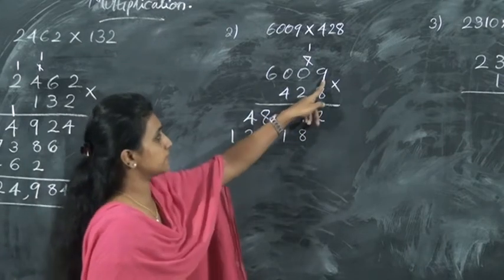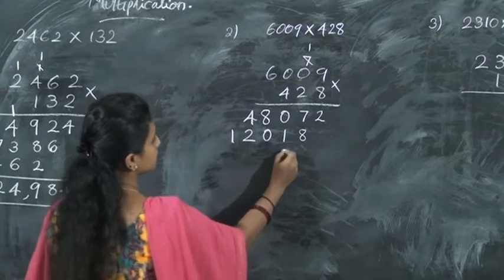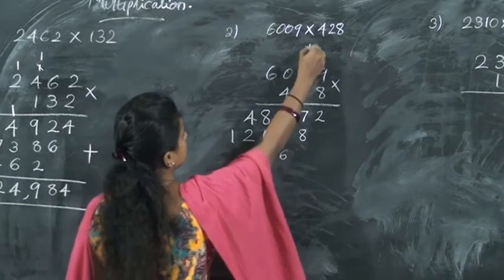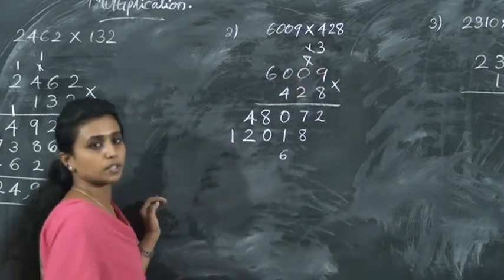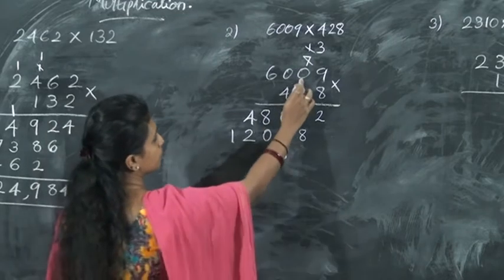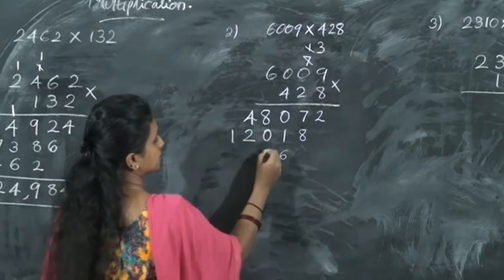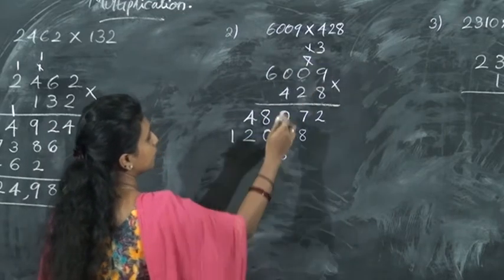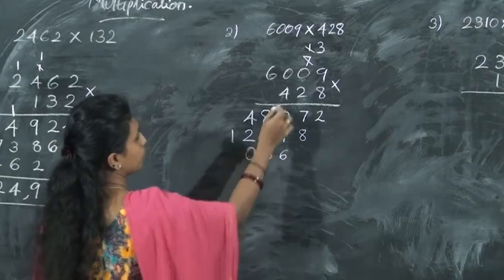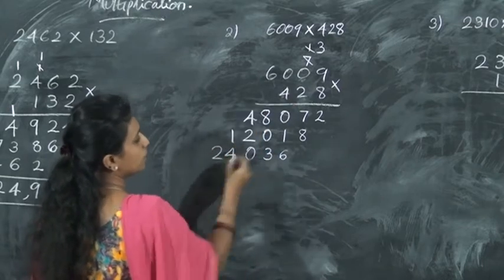Now multiply this 4 with all these numbers. 4 nines are 36 — write 6 here and 3 is carried over. 4 zeros are 0 plus 3 is 3. 4 zeros are 0. 4 sixes are 24.